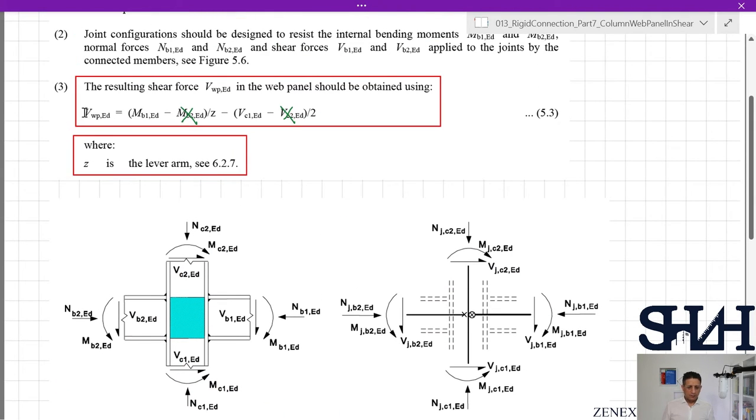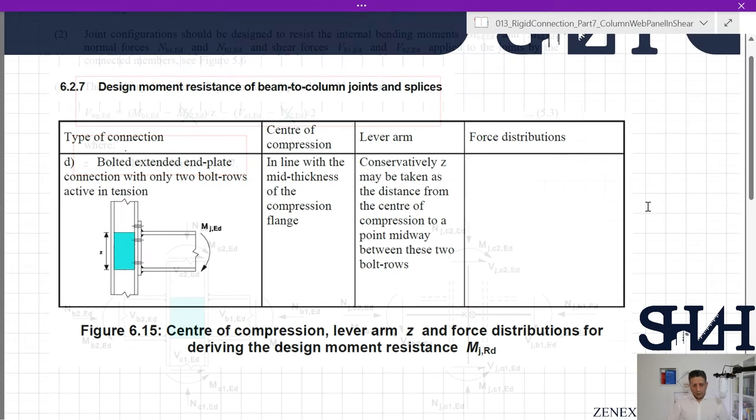From here we can calculate vwp,Ed. The only missing parameter is z, the lever arm, taken from clause 6.2.7. In clause 6.2.7 there is a table you can use in Figure 6.15. We have this table and the type of connection is given here. This is the relevant connection: bolted extended end plate connection with only two bolt rows active in tension. Most likely this is the most relevant case to our task. Center of compression is in line with the mid-thickness of the compression flange.